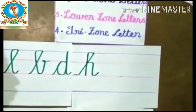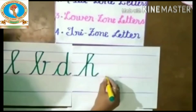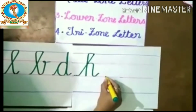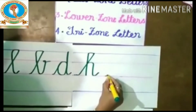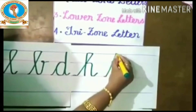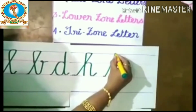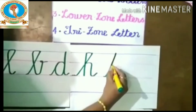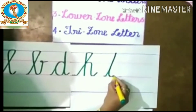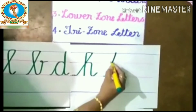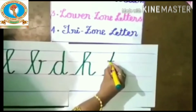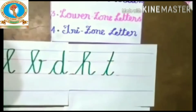The next one is T. Start from the third line, go up to the first line. Don't take your hand — come down to the third line. A small line to the second line. T.